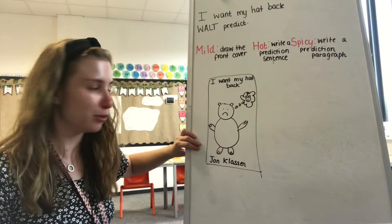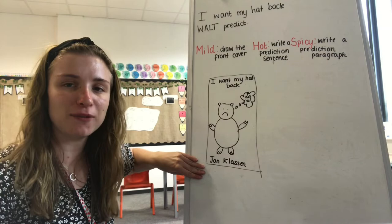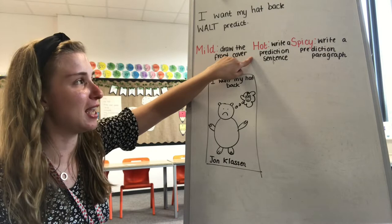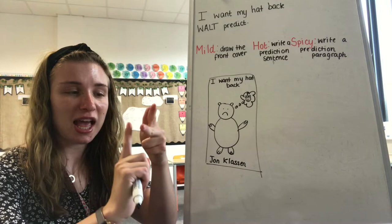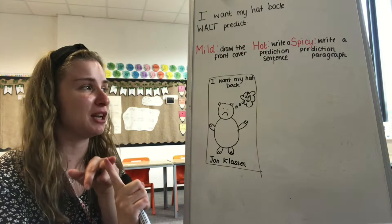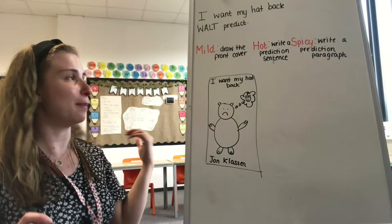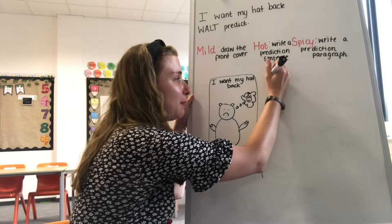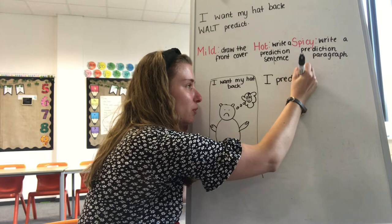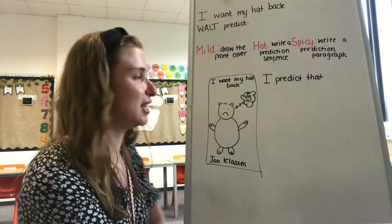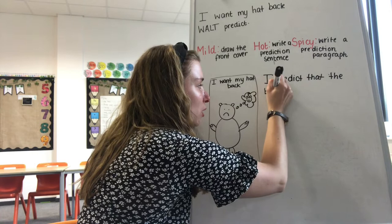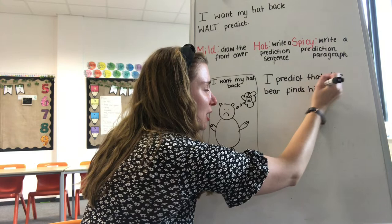So if you think you just want to do mild, you can do this. But if you want to challenge yourself, we're going to do hot. Our hot task today is to write a prediction sentence. What do we need to remember when we write our sentences? We need a capital letter, finger spaces, and a full stop or something at the end — a question mark or an exclamation mark. I'm going to write a prediction sentence, which means I need to start with: I predict that. What do I think is going to happen? Do I think the bear is going to get his hat back? I think yes, he does. So: I predict that the bear finds his hat. There is my prediction sentence.